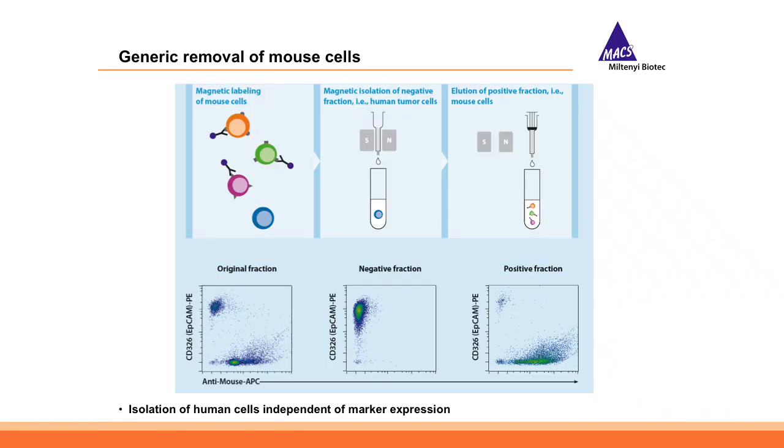We performed a large cell surface marker screening of about 450 antibodies on different mouse tissues and strains to define a cocktail of antibodies able to recognize all the different mouse cells from all organs of all mouse strains. This method is completely independent of any marker expressed on your human cells. You perform dissociation, add the labeling cocktail, wait about 15 minutes, pass it over the magnetic column, and in only about 20 minutes you get a pure population of human cells — working with solid tumors, liquid tumors, and even non-tumor cells grafted into a mouse host.